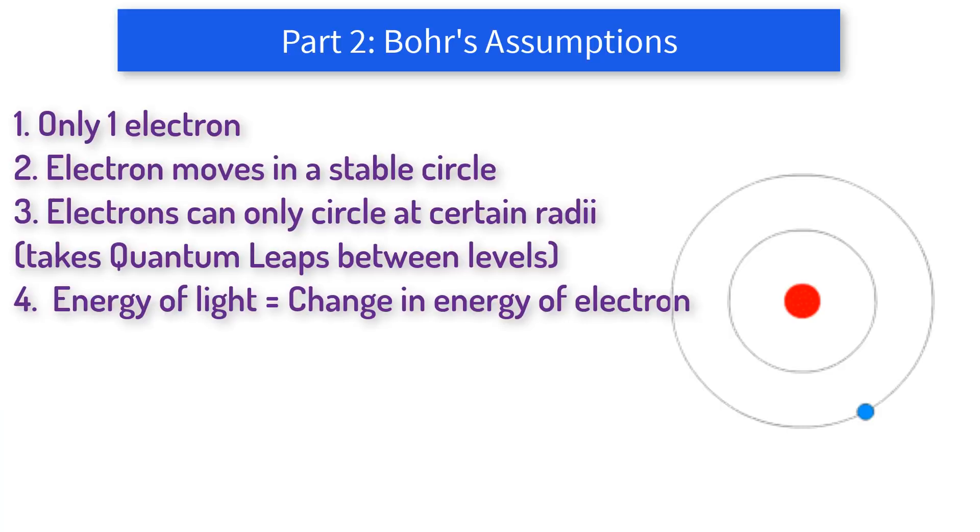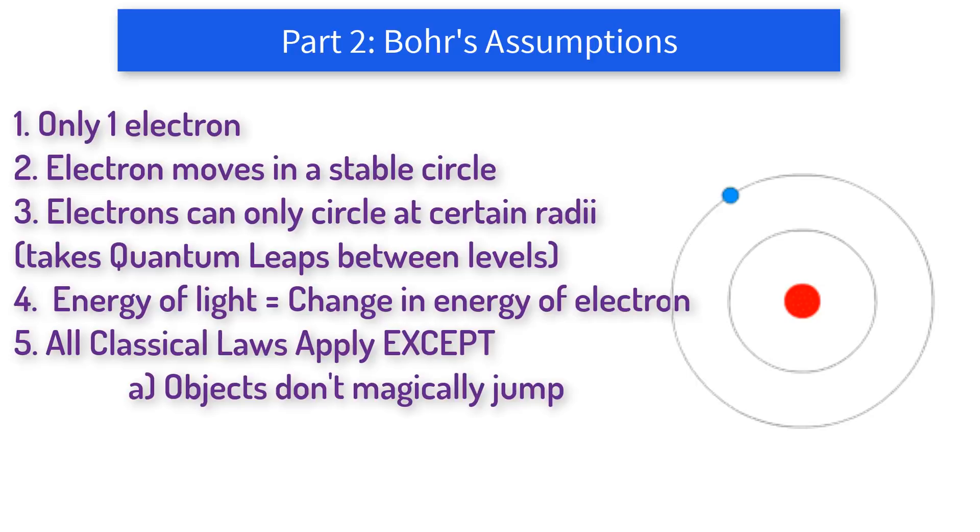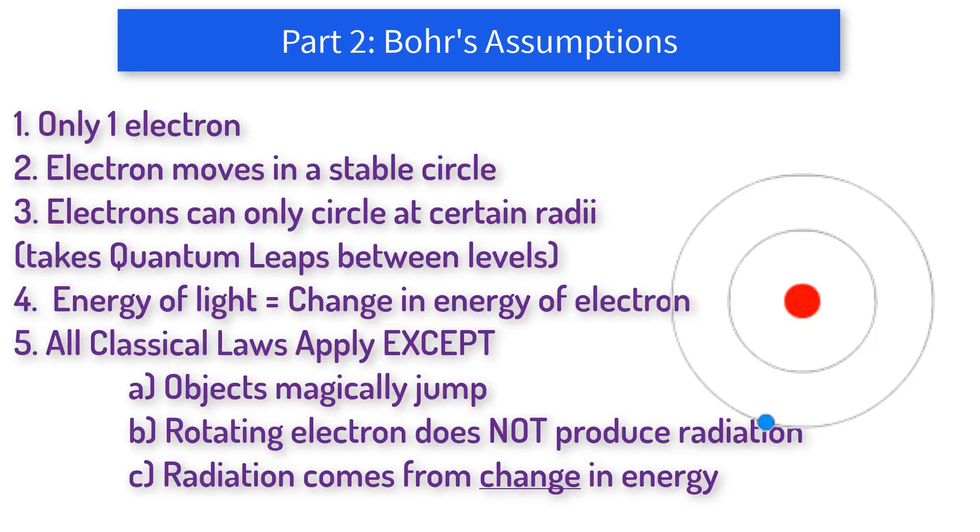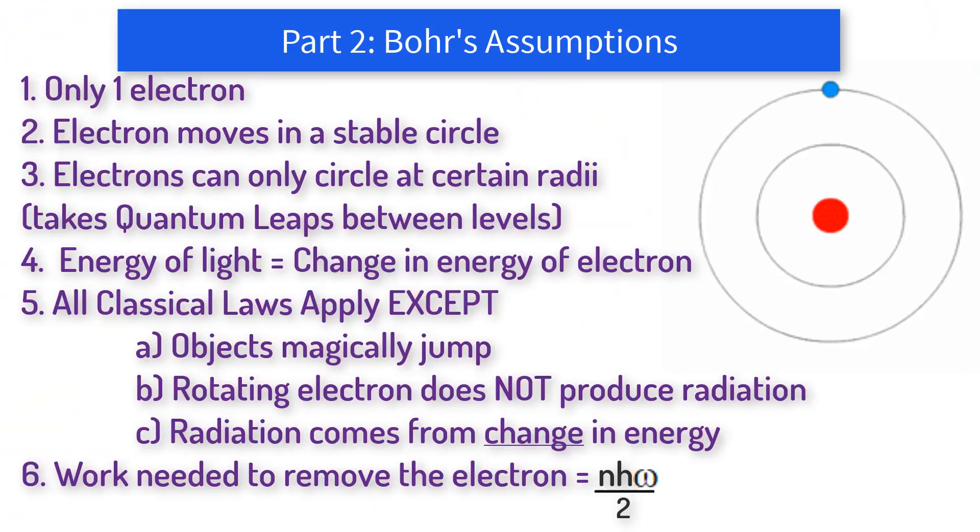Five, all classical laws of physics apply with three exemptions: a) he knew that in classical physics atoms don't just jump between positions; b) in classical physics a rotating charged particle will radiate energy and spiral into the nucleus, but Bohr just basically said nope, not for my electrons; and c) in classical physics the energy of the light produced is due to the energy of the electron—in this theory the light is created due to the change in energy. And six, the position of the electron is quantized with the rule: the work needed to remove the electron equals an integer times Planck's constant times the frequency of the electron's orbit divided by two.